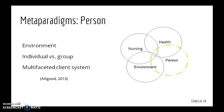The person is an open client system in reciprocal interaction with the environment. The environment greatly affects the decisions and actions made by the person. The person may be an individual or a group of people. The client system is multifaceted, involving interrelationships among physiological, psychological, sociocultural, developmental, and spiritual factors. All these factors are important when considering the person as a whole.